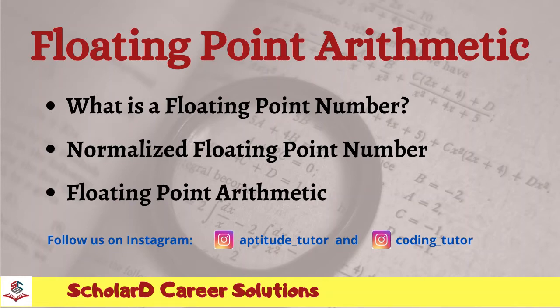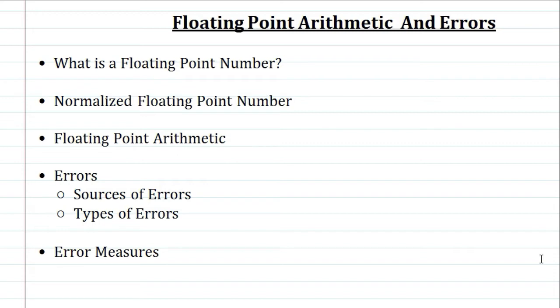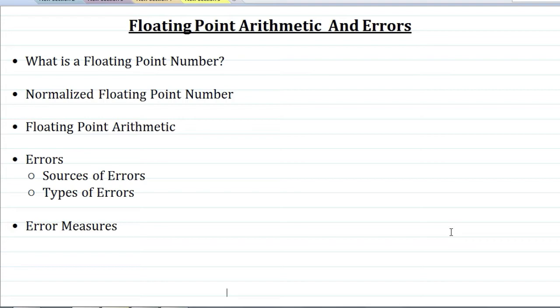Welcome students. In this chapter we will be learning floating point arithmetic and the errors. This is a first and introduction chapter in the subject computer oriented numerical techniques, or numerical computing. In this video we will be learning what is a floating point number, why it is called a floating point number, what is a normalized floating point number, how to do arithmetical operations such as addition and subtraction, basic laws of arithmetic, sources of errors, types of errors, and various formulas for measuring errors in your solution.